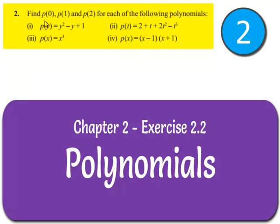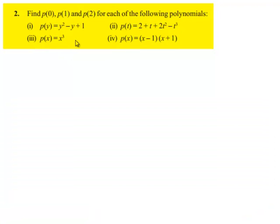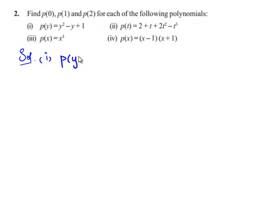Moving on to the second problem: find p of 0, p of 1, and p of 2 for each of the following polynomials. We are given 4 polynomials: p of y is equal to y square minus y plus 1; p of t is equal to 2 plus t plus 2t square minus t cube; p of x is equal to x cube; and p of x is equal to x minus 1 into x plus 1.